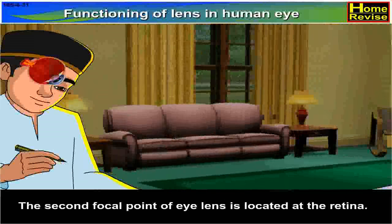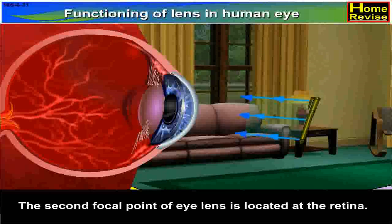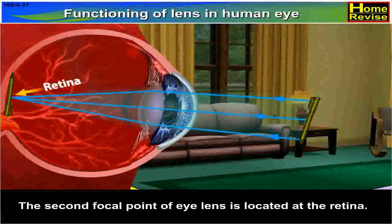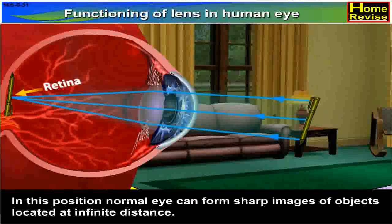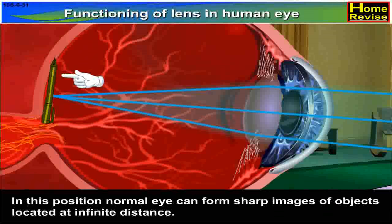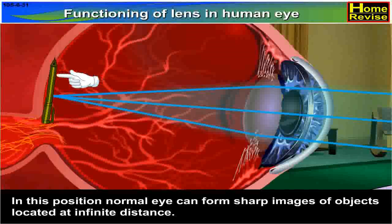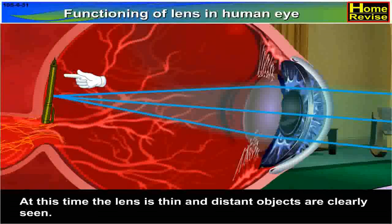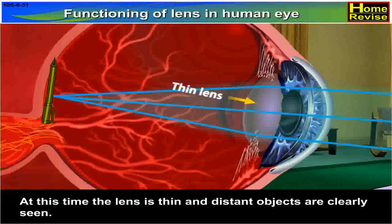The second focal point of the eye lens is located at the retina. In this position, a normal eye can form sharp images of objects located at infinite distance. At this time, the lens is thin and distant objects are clearly seen.